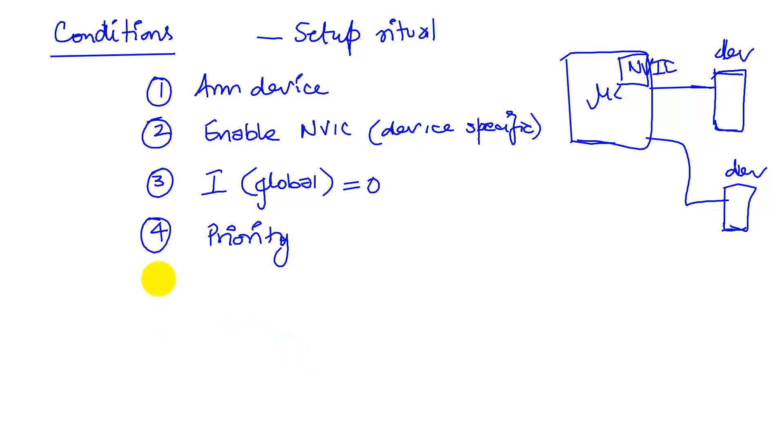The last thing that we want to look at is the trigger. Unlike these steps, unlike the steps one, two, three, four, which are part of the setup ritual, the trigger is an asynchronous event. This is what causes the interrupt to occur.